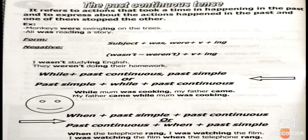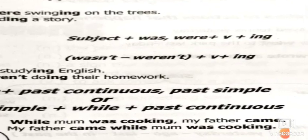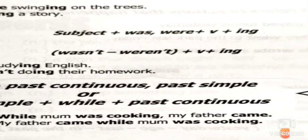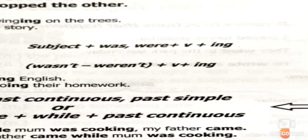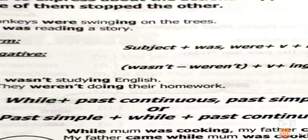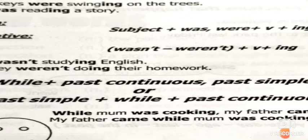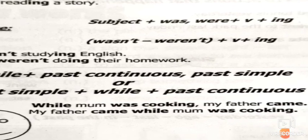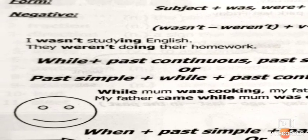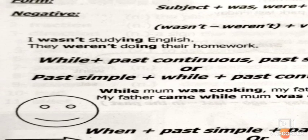The form is: subject + was/were + verb + -ing. For the negative: wasn't or weren't + verb + -ing. Example: 'I wasn't studying English,' 'They weren't doing their homework.' We don't change the verb -ing form; we just add 'not' after was/were.